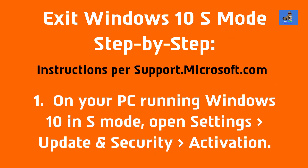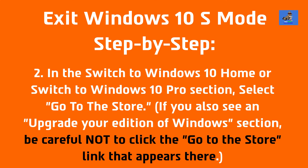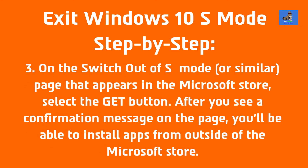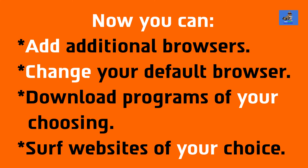Here are the instructions to exit out of Windows 10 in S-mode: 1. On your PC running Windows 10 in S-mode, open Settings, then Update and Security, then Activation. 2. In the Switch to Windows 10 Home or Switch to Windows 10 Pro section, select Go to the Store — be careful not to click the Go to the Store link in any upgrade section. 3. On the Switch out of S-mode page in the Microsoft Store, select the Get button. After seeing a confirmation message, you'll be able to install apps from outside the Microsoft Store and add additional browsers, change your default browser, download programs of your choosing, and surf websites of your choice.